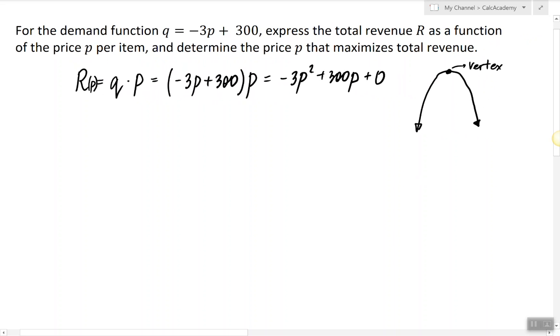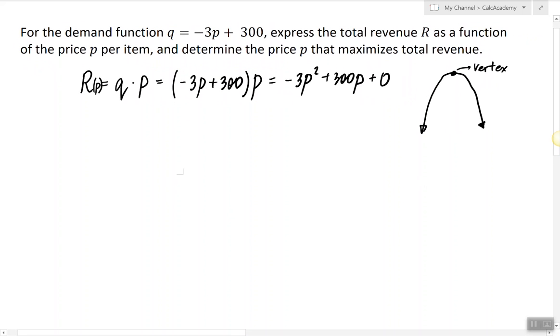Now I can easily find the coordinate, the x-coordinate of the vertex, or in this case the p-coordinate of the vertex, by using the following formula where b is the coefficient of p and a is the coefficient of p squared.